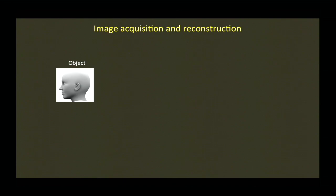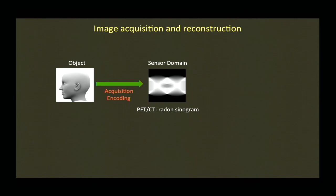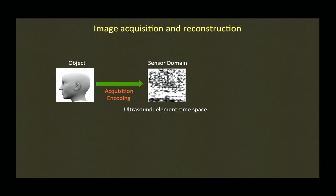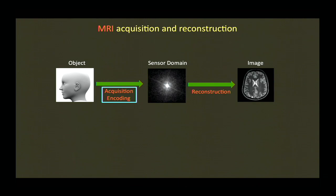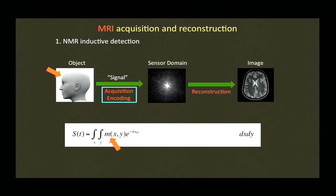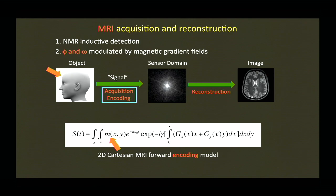To understand how we approach this, let's look at imaging independent of modality. You start with an object, forward-encode it into an intermediate representation — the sensor domain. The sensor domain could be a radon sinogram for PET or CT, element time-space for ultrasound, or Fourier k-space for MR. The reconstruction problem is simply inverting the forward encoding. For MRI specifically: you have some object, use inductive detection, and get a signal that you phase- and frequency-modulate by applying magnetic gradients. We immediately recognize this as the Fourier transform.